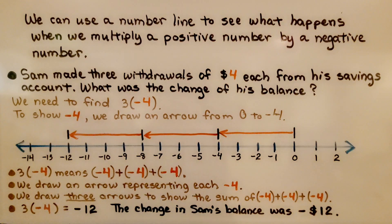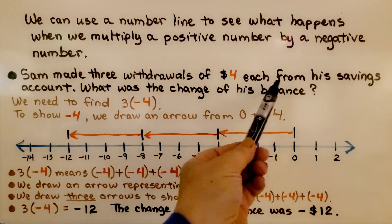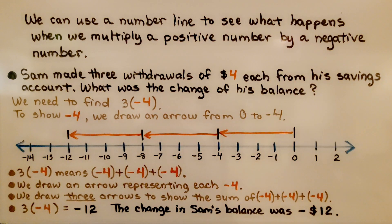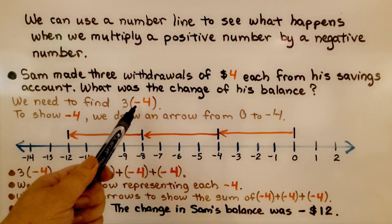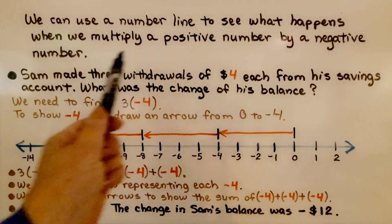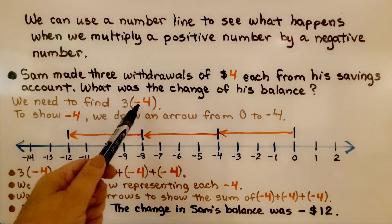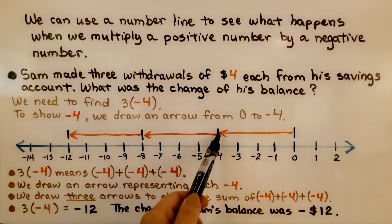We can use a number line to see what happens when we multiply a positive number by a negative number. Remember, Sam made three withdrawals of four dollars each from his savings account. What was the change in his balance? We need to find three times negative four. There were withdrawals, so that's taking four away — that's a negative four. He did it three times. To show negative four, we draw an arrow from zero to negative four.